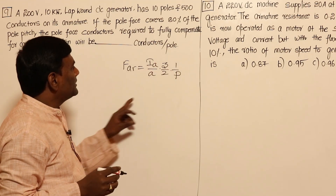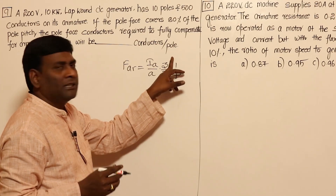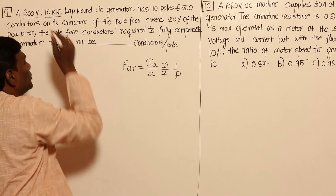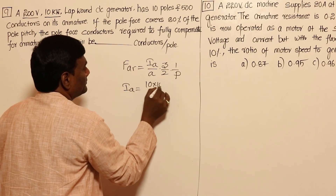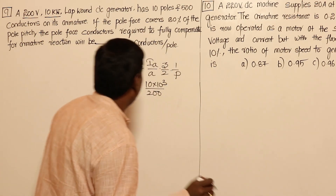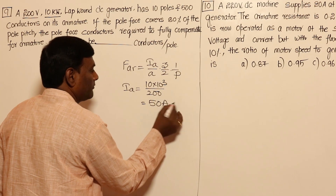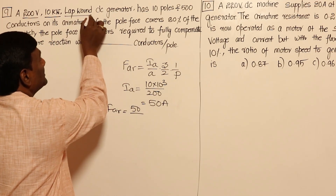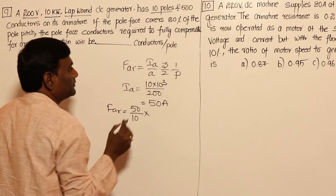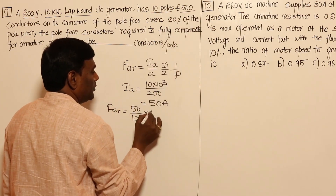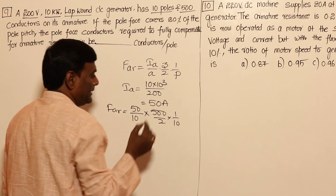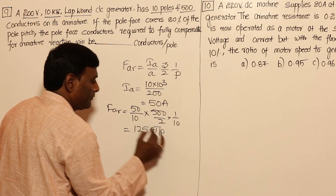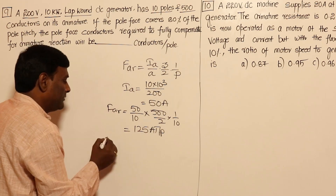We need to calculate armature MMF per pole. The armature current I_A = 10 kW / 200 V = 50 amperes. For lap winding, number of parallel paths A equals number of poles = 10. Armature MMF per pole = (I_A / A) × (Z / (2 × P)) = (50 / 10) × (500 / (2 × 10)) = 5 × 25 = 125 ampere-turns per pole.